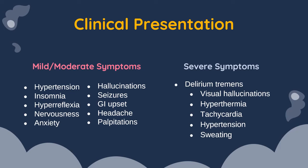In severe alcohol withdrawal syndrome, it's called delirium tremens. It's characterized by a combination of altered sensorium and physical symptoms — both mental and physical symptoms presenting together. Visual hallucinations, hyperthermia, tachycardia, hypertension, and sweating all occur — it's a combination of everything mental and physical.